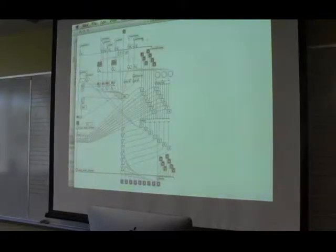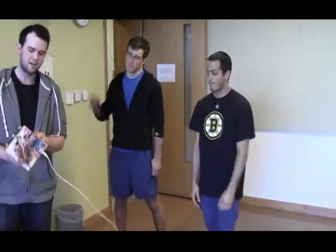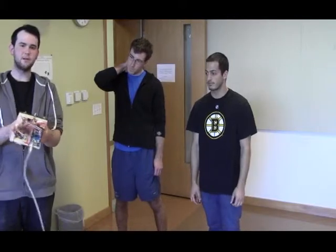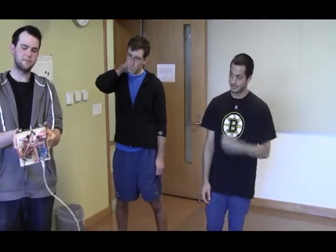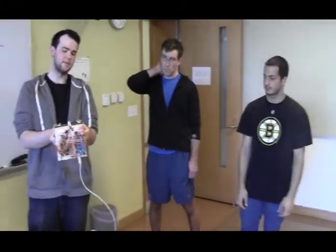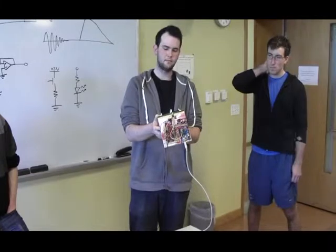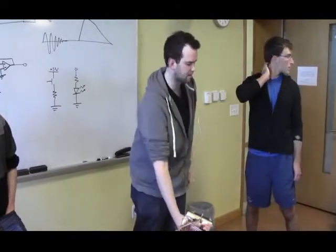Or you can also just transpose it up a half step or down a half step. These two buttons on either side, if the three-way switch is all the way down, they go up and down the scale. Or if it's all the way up, they go up and down just a half step, so you can change the key. If it's in the middle, it's temporarily up a half step, so when you release it, it goes back down.